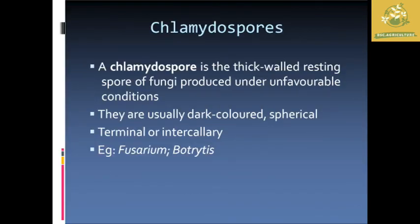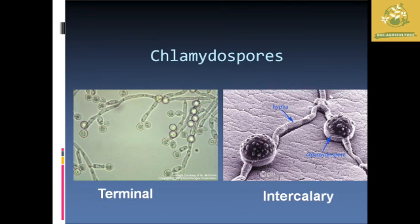Now we are going to see about chlamydospores, which are thick-walled resting spores of fungi produced under unfavorable conditions. They are dormant in nature and the spores are released once favorable conditions come. They are usually dark in color with a spherical shape, also known as terminal or intercalary spores. Examples: Physarium and Botrytis. In terminal chlamydospores the spores are found at the edge of the cells, while in intercalary chlamydospores they are found in the middle of the hyphal cells.